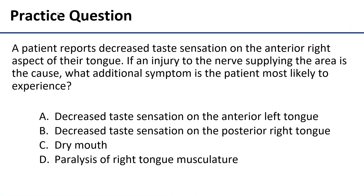Let's do a practice question to test what you've learned. The correct answer is C, dry mouth. This is a multi-step question, so let's walk through why. We have a patient reporting decreased sensation on the anterior right aspect of their tongue. We think it's a nerve injury, and to prove that we'd like to see some additional symptoms. We need to figure out what nerve is responsible for taste sensation on the anterior right aspect of the tongue — and that is going to be the right chorda tympani.